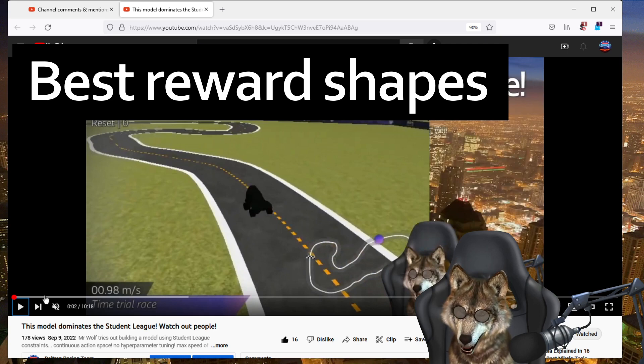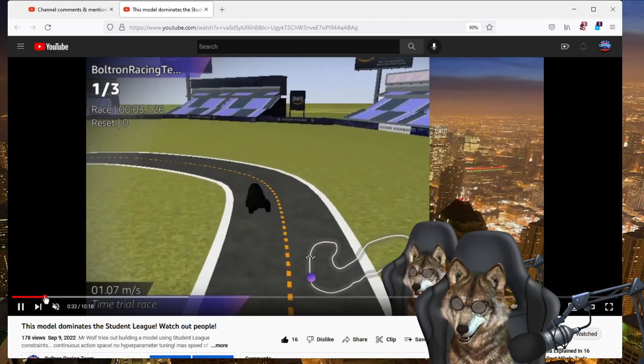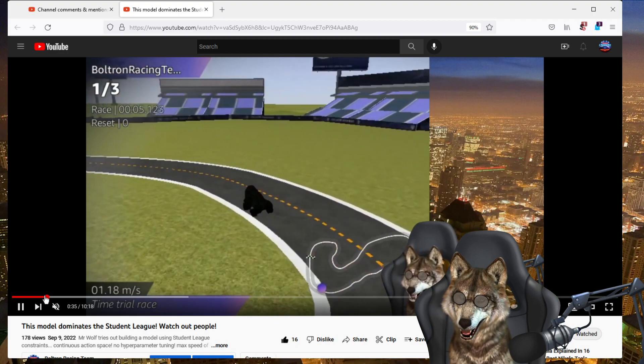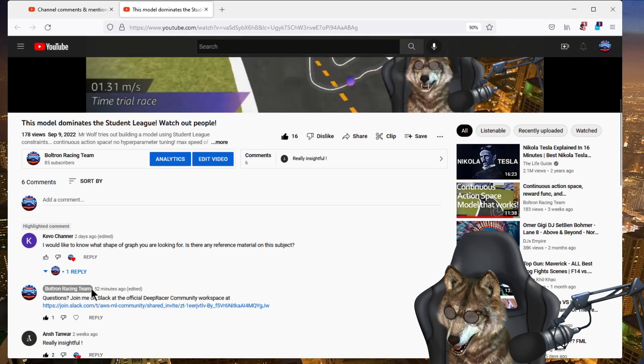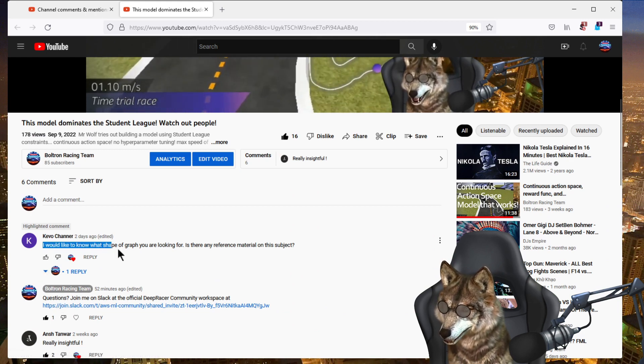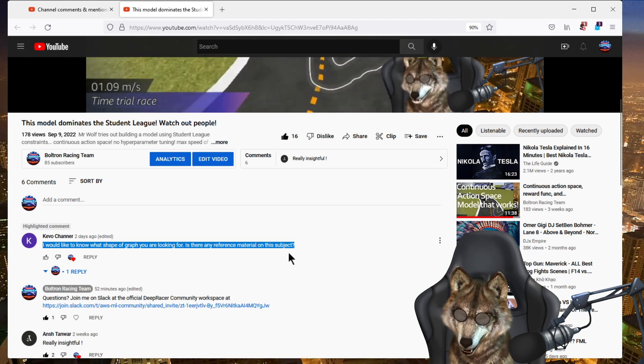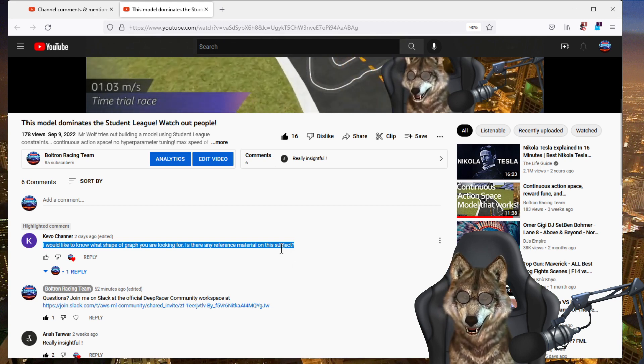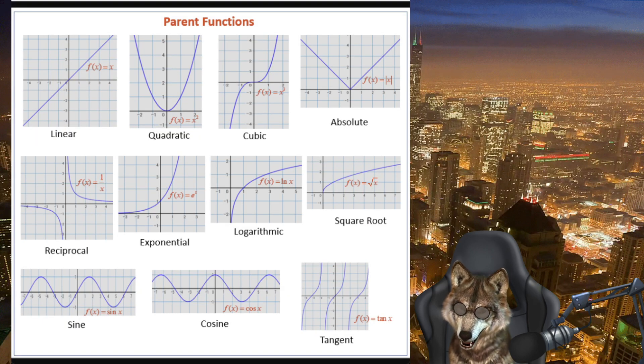I recently got a question about this video I posted earlier in the month about a model that I created for student league one, where the car is driving at full speed one meter per second. Kivo Channer says I would like to know what shape of graph you're looking for, is there any reference material on the subject. So let's answer that tonight.